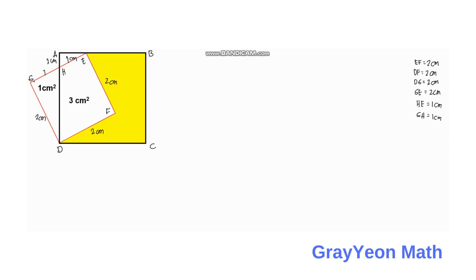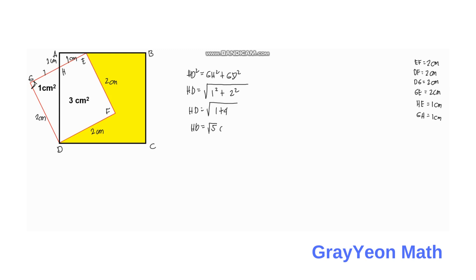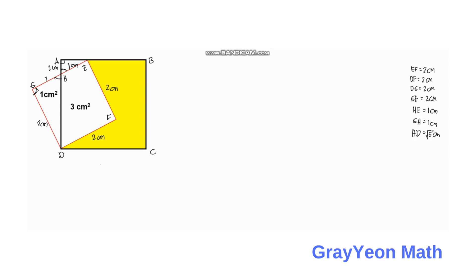Now we focus on triangle GHD. Notice it is a right triangle since it comes from the square. By the Pythagorean theorem, HD squared equals GH squared plus GD squared. GH equals 1 and GD equals 2, so HD equals the square root of 1 plus 4, which means HD equals square root of 5 centimeters.